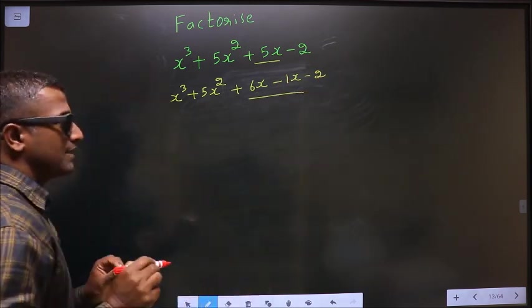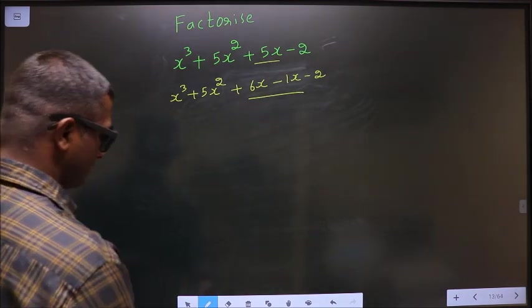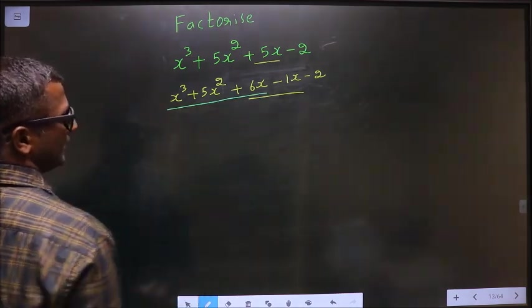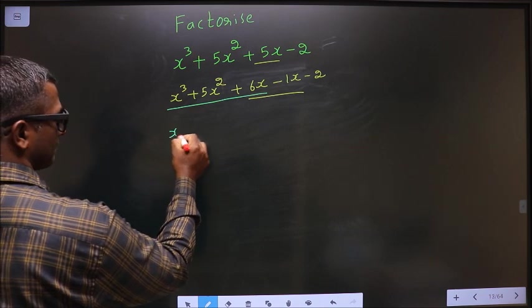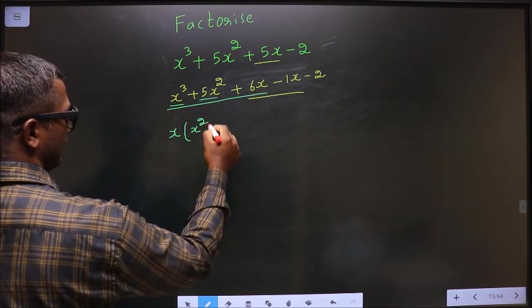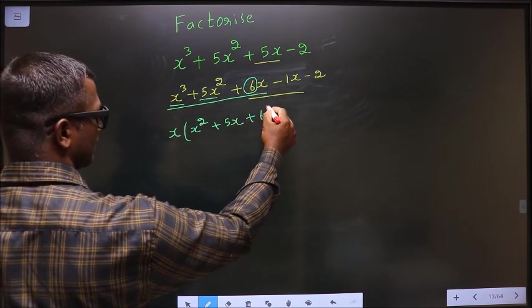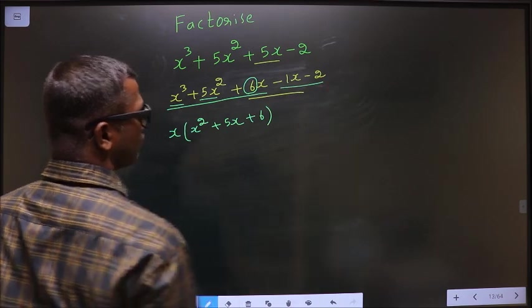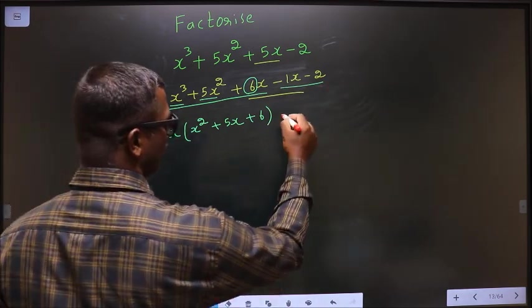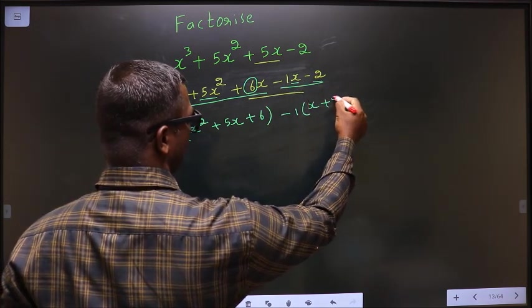Clear? In place of 5x, I have written 6x minus 1x. Next. What can be taken out common in these 3 terms is x. So here you get x square and here you get 5x and here you get 6. What can be taken out common in these 2 terms? Minus 1 you take out common. So here you get x and here you get plus 2.